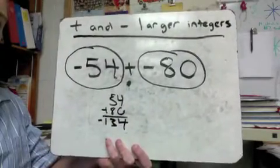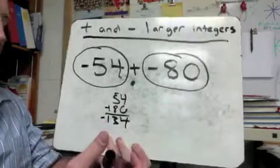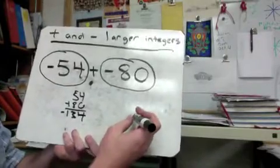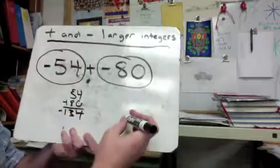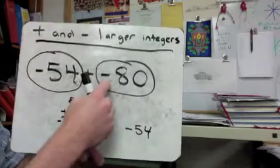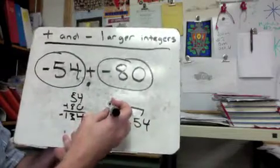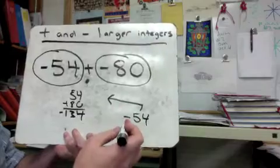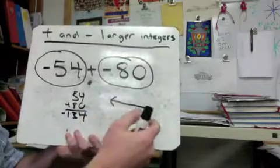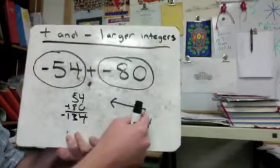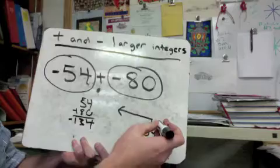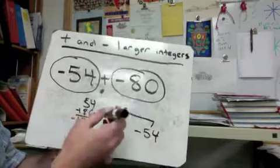It's 134 negatives, so I just put a negative sign in front of it — negative 134. If we use a number line, I start at negative 54. I'm going 80 in the negative direction, so I go 80 this way. The numbers move further negative — negative 55, negative 56 — so you just add 80 onto the 54, and going 80 this way gets you all the way to negative 134.